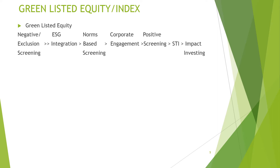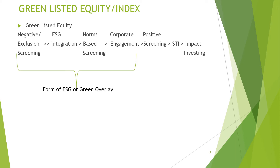For green listed equity, negative exclusion screening is the most widely applied: ESG performance or international norms are applied, and companies not following them are removed. ESG integration involves the systematic and explicit inclusion of ESG factors. Norm-based screening removes companies that violate existing norms. Corporate engagement gives better ratings to companies actively engaging with shareholders and on corporate governance. All of these are forms of ESG or green overlay.